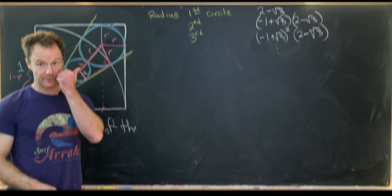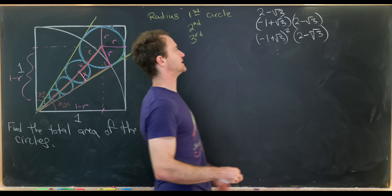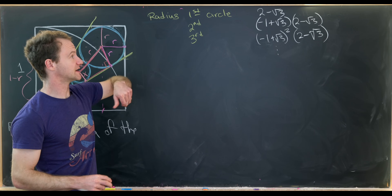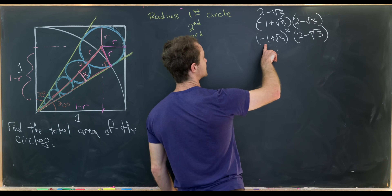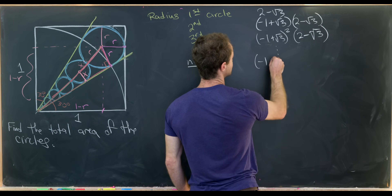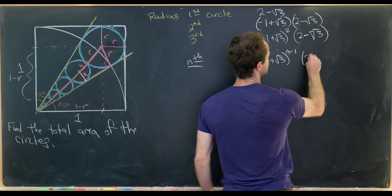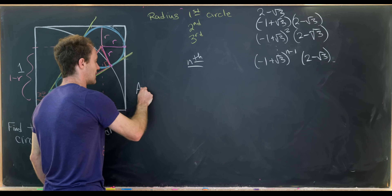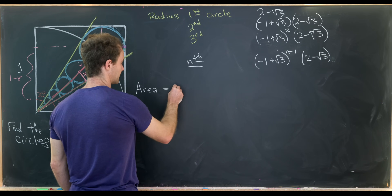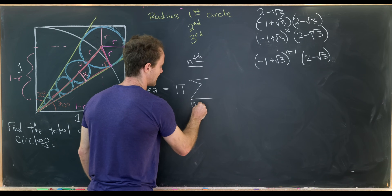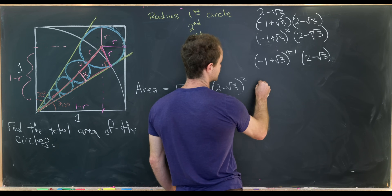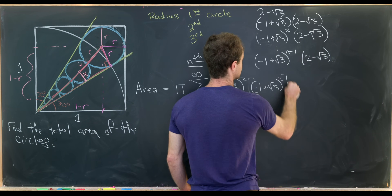To summarize: the radius of the first circle is 2 minus √3. The second circle's radius is that times (−1+√3). The nth circle's radius is (−1+√3)^(n−1) times (2−√3). Now we're ready to write down the total area of all of these circles. We'll have π times the sum as n goes from 1 to infinity of r squared, which becomes (2−√3)² times (−1+√3)^(2(n−1)).